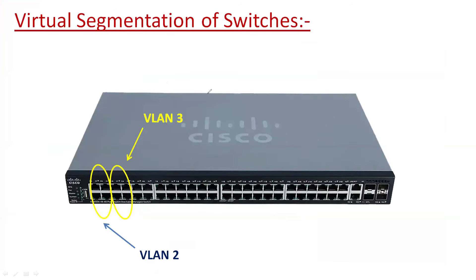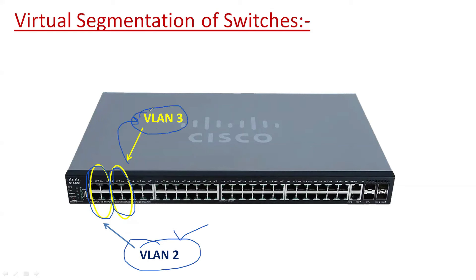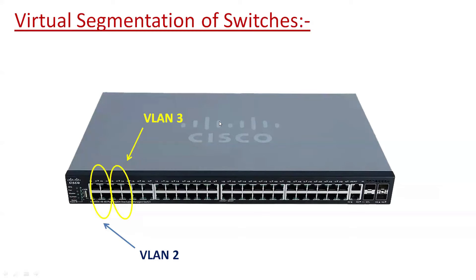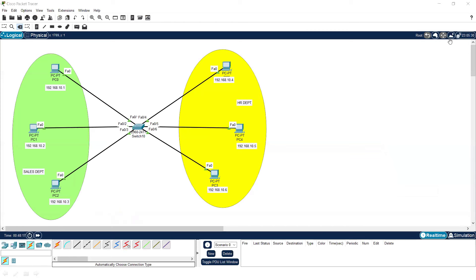I'm using one switch but it will be logically divided into two. We can do that by creating VLANs on the switch. I will allot the first two or three interfaces to VLAN 2 — VLAN 2 is logical grouping number two. The other two or three interfaces will be allotted to VLAN 3. The interfaces in VLAN 3 will behave as a different switch, and interfaces allotted to VLAN 2 will also behave as a different switch. Let's do the configuration.